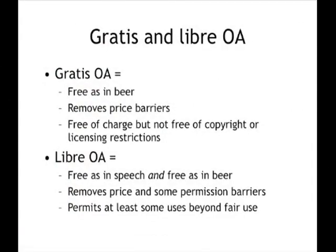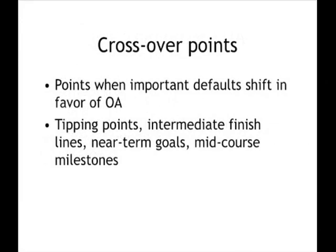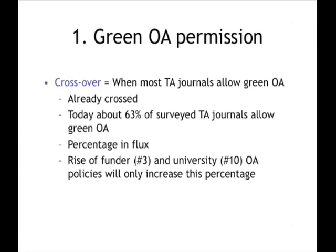I'm going to talk about 12 crossover points in the future of open access, and two of them — the easiest two — have already been accomplished. I'm only including them so you get a sense of what I mean by a crossover point. The first crossover point is when most toll access journals allow green open access to their articles.